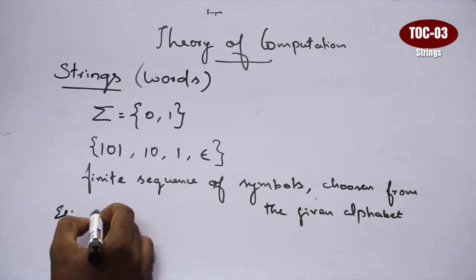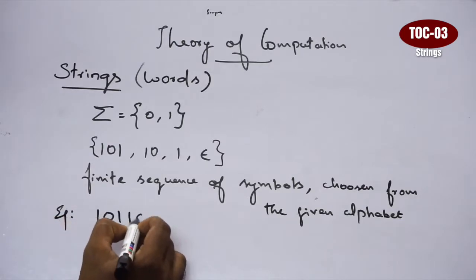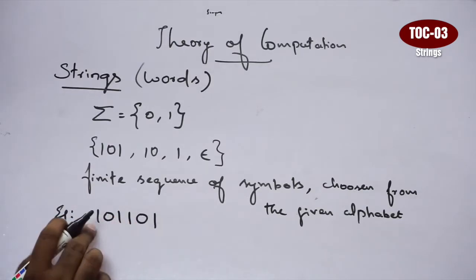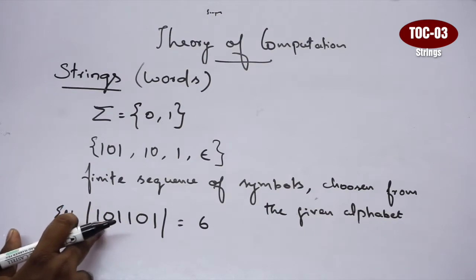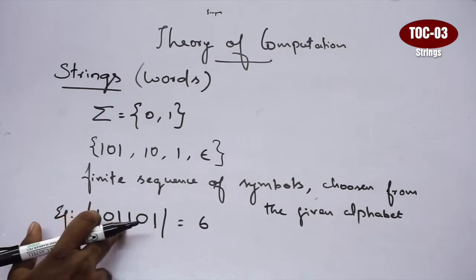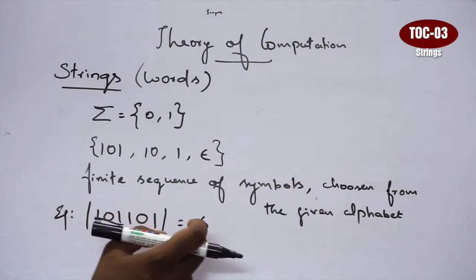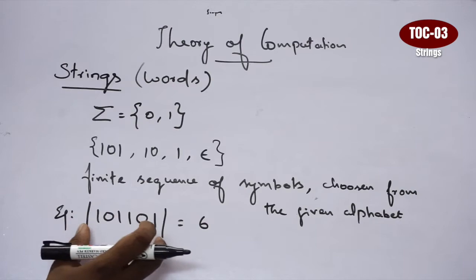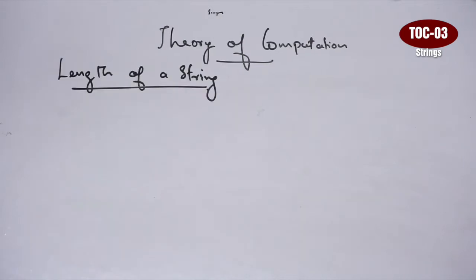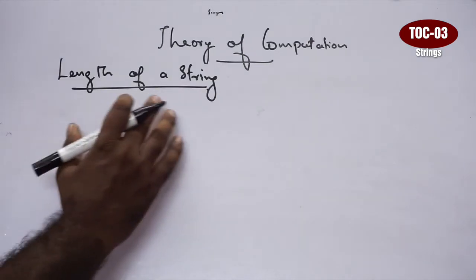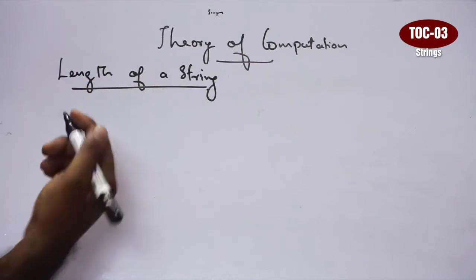For example, we use the string 1, 0, 1, 1, 0, 1. If we use this sample string, we count the length: 1, 2, 3, 4, 5, 6. So the length of this string is 6. This is the modulus notation.